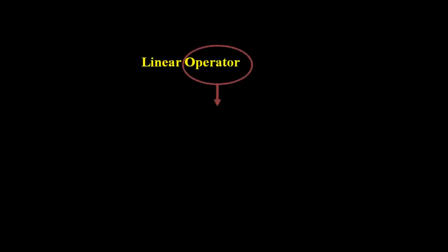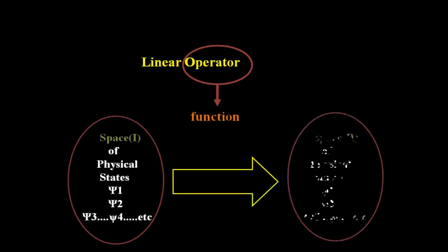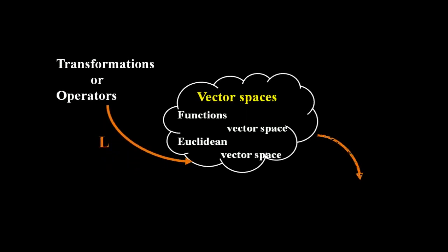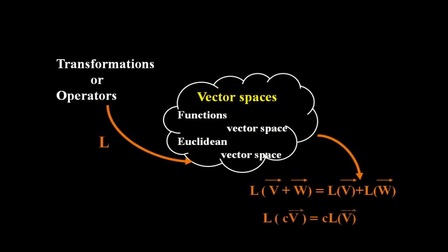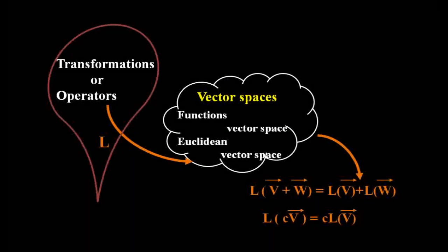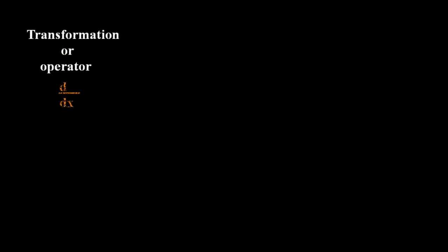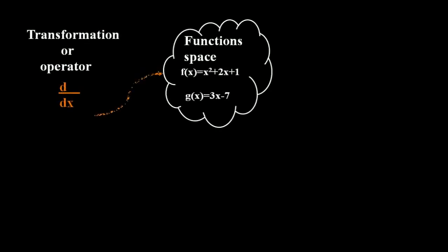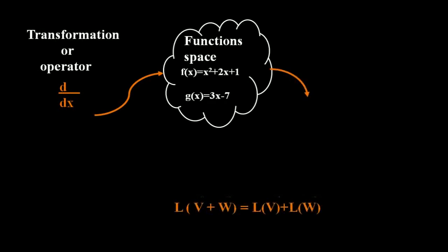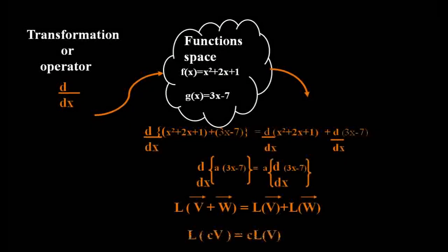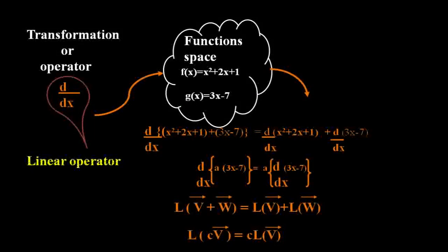Linear operators: an operator is a function over a space of physical states to another space of physical states. If a transformation or operator is applied to a vector space and the transformation satisfies both linearity relations, then it is called a linear operator or linear transformation. For example, the derivative transformation applied to a function space satisfies both relations, and therefore the derivative is a linear transformation.